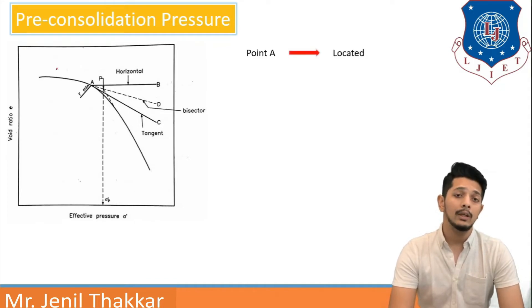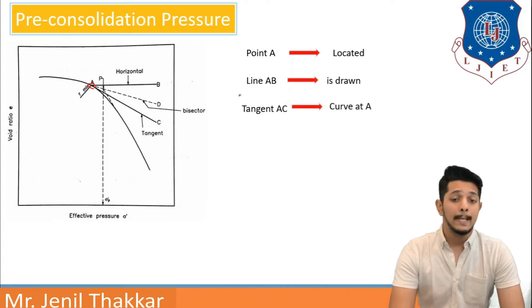First of all, we have to decide a maximum curvature point A according to our eye judgment. I am deciding this as point A. Next step is to draw a horizontal line from point A, that is line AB. AB is drawn. Then I will draw a tangent AC to the curve at point A.